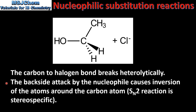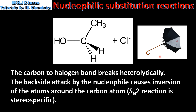The backside attack by the nucleophile causes inversion of the atoms around the carbon atom. This means that the SN2 reaction is stereospecific. Here we can see the inversion of the atoms bonded to this carbon atom, which is caused by the backside attack of the nucleophile. The inversion of the atoms around the carbon atom is often compared to an inside-out umbrella, as you can see in this picture here.